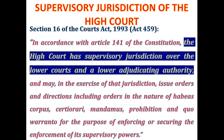In recap, the High Court has: original jurisdiction in all matters as seen in Article 140 and Section 15; exclusive original jurisdiction in the enforcement of fundamental human rights; appellate jurisdiction over criminal matters from the Circuit Court and civil and criminal matters from the District Court; and supervisory jurisdiction over all lower courts and any lower adjudication authority. This is where we draw the curtains on the jurisdiction of the High Court as established under Article 126 of the Constitution.